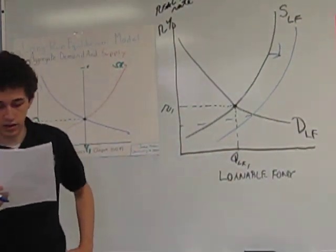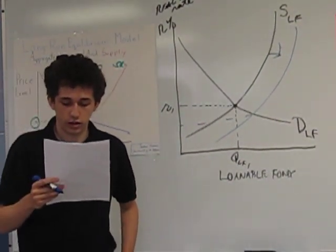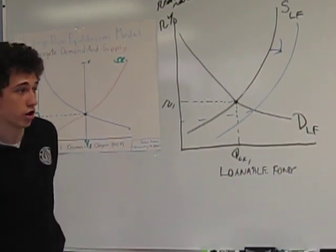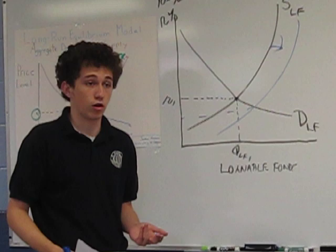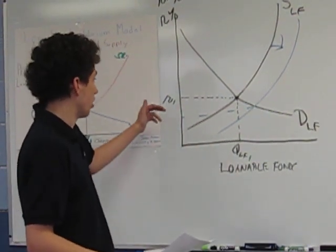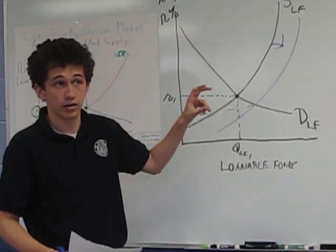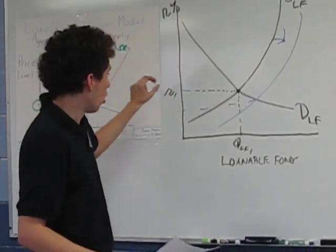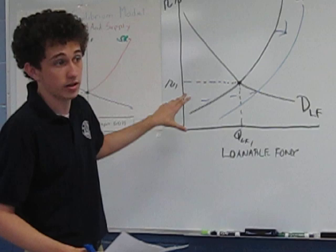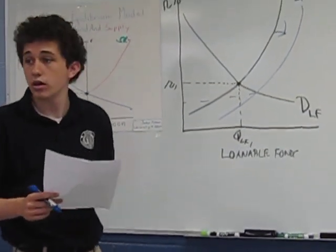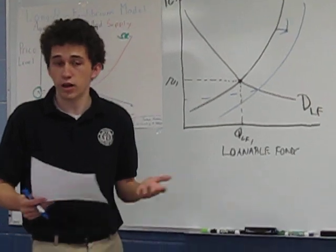Now, for question C, based on the real interest rate change identified in part B, will interest-sensitive expenditures increase, decrease, or remain unchanged? Interest-sensitive basically means that they're going to react to any change. For increased real interest rates, they're going to decrease the amount of spending that they have, this is for investment. Or when real interest rate decreases, they're going to increase investment spending by a large amount. Interest-sensitive means what? Similar to price elastic.